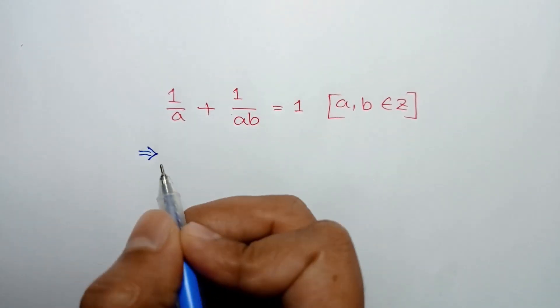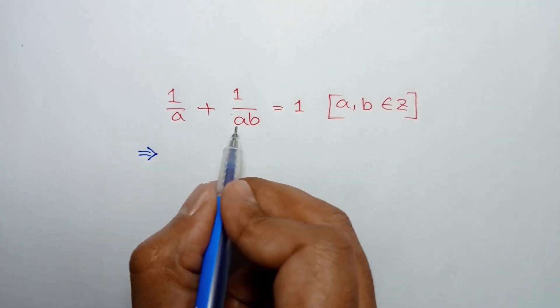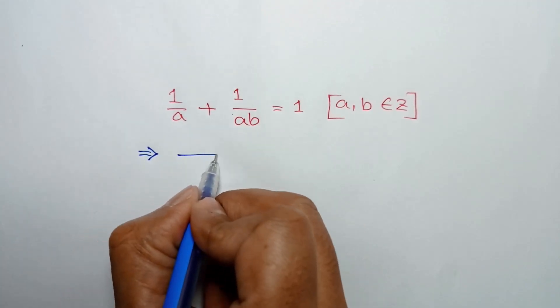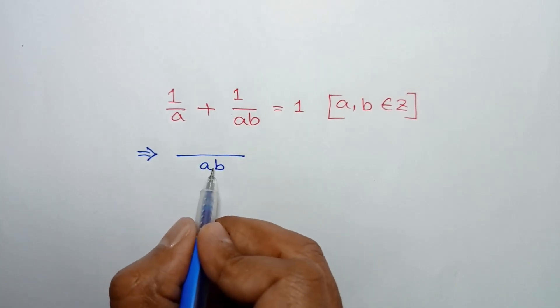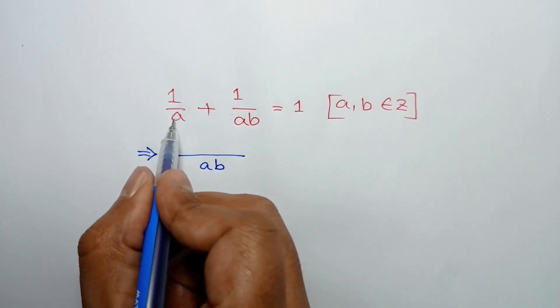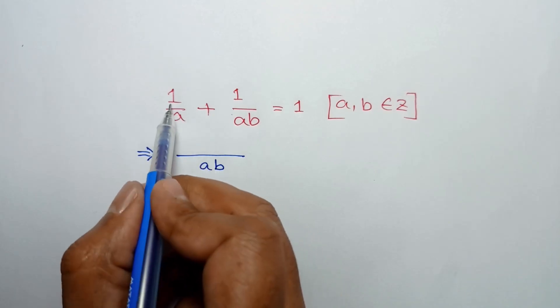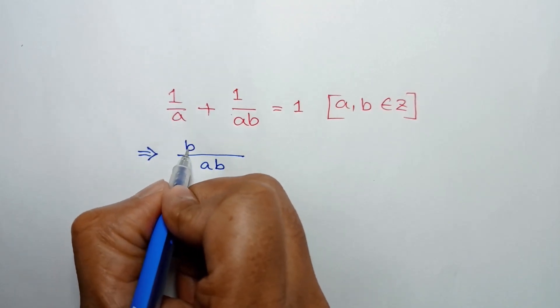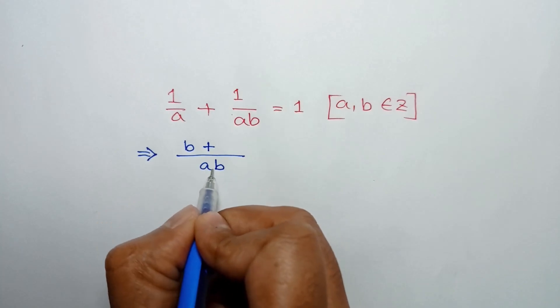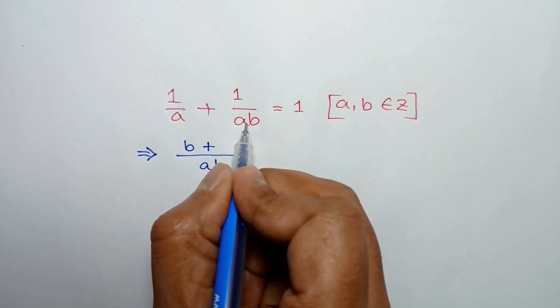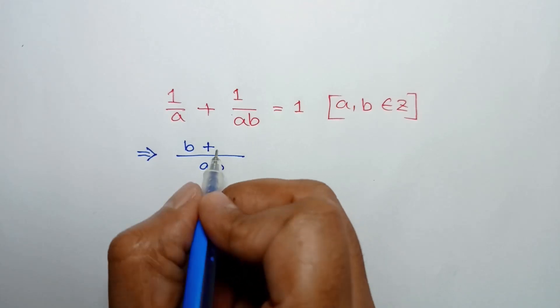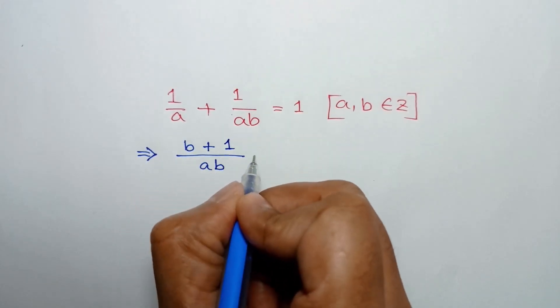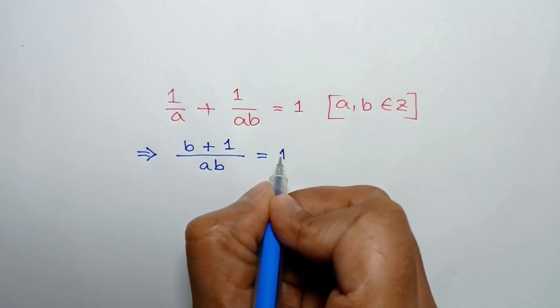The LCM of a and ab is ab. Now, ab divided by a is b, and b times 1 is b, plus ab divided by ab is 1, and 1 times 1 is 1, equals 1.